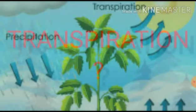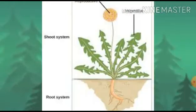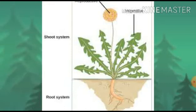Transpiration is the process by which plants lose water in the form of vapor from their body parts. Plants absorb water from the soil for different activities. Of that total water, only 1% is utilized for metabolic activities. The remaining 99% of water is expelled out through the transpiration process.